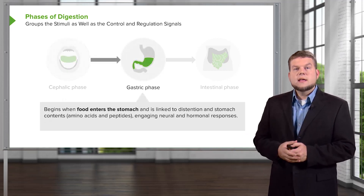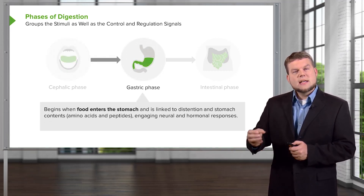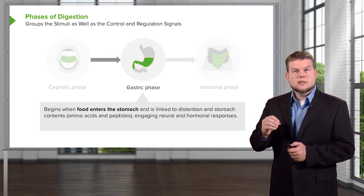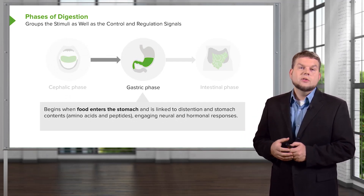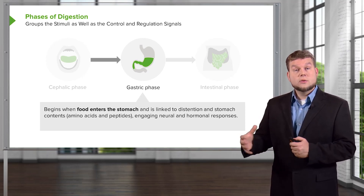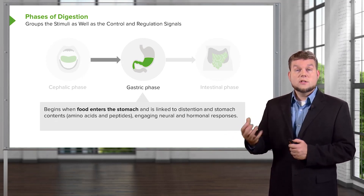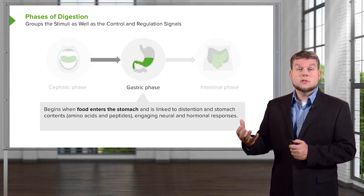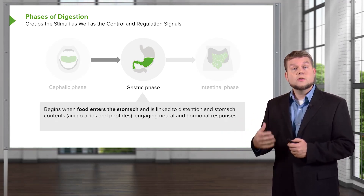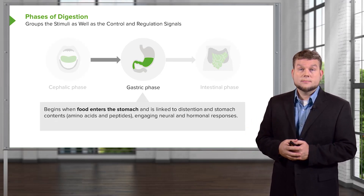The gastric phase is the one you think about most when you eat, because that's when the foodstuff actually enters the stomach. This is linked to how the stomach distends when food is added to it — so it gets larger — as well as various constituents of foodstuff such as peptides and amino acids, which also stimulate this particular phase.